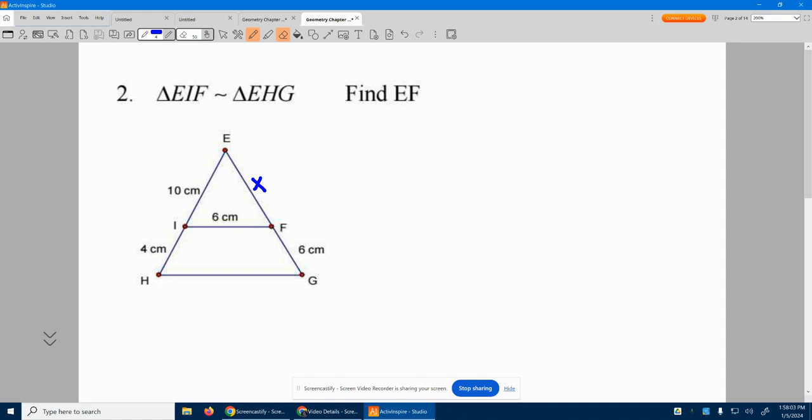Well, in this case, I can do the side splitter theorem because I have measurements on the sides of 10 and 4 and X and 6. So I can just imagine 10 is to 4 as X to 6.